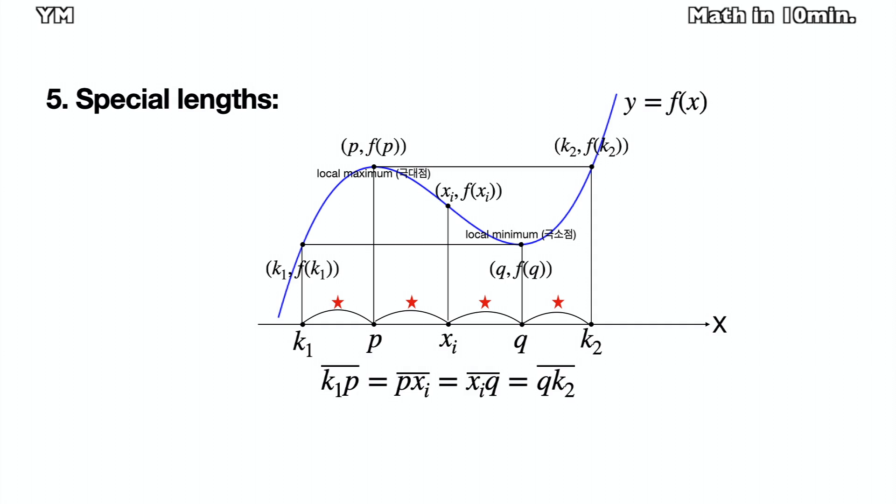This is the last topic in this video. Let me explain the picture first. Suppose that f(x) is a cubic function which the coefficient of the greatest degree of the polynomial is positive. (p, f(p)) is the local maximum. (q, f(q)) is the local minimum. (k1, f(k1)) is the point which has the same f value with the local minimum. In other words, f(k1) is equal to f(q), and (k2, f(k2)) is the point which has the same f value with the local maximum. Lastly, (xi, f(xi)) is the inflection point of f.